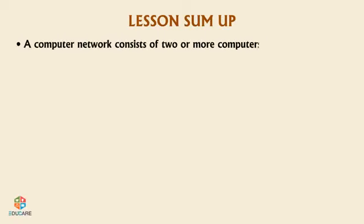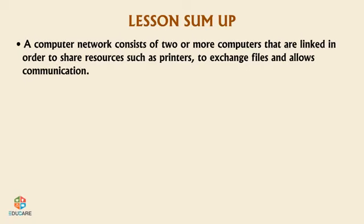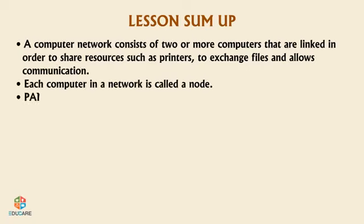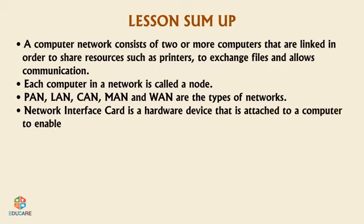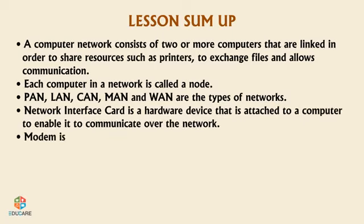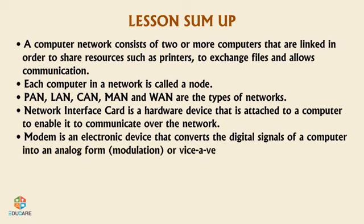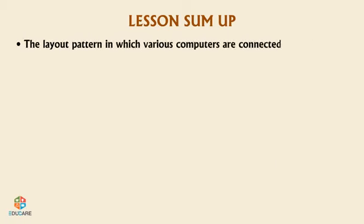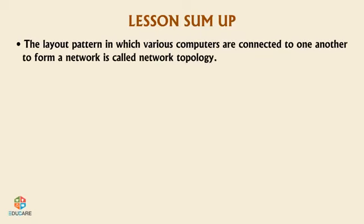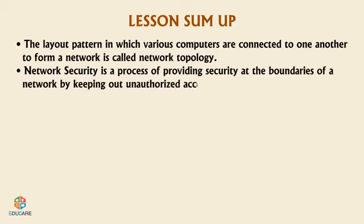Lesson Summary: A computer network consists of two or more computers linked to share resources such as printers, to exchange files, and allow communication. Each computer in a network is called a node. PAN, LAN, CAN, MAN, and WAN are the types of networks. A Network Interface Card (NIC) is a hardware device attached to a computer to enable it to communicate over the network. A modem converts digital signals to analog form (modulation) and vice versa for transmission over a telephone line. The layout pattern connecting computers to form a network is called network topology. Network security is a process of providing security at the boundaries of a network by keeping out unauthorized access and malware.